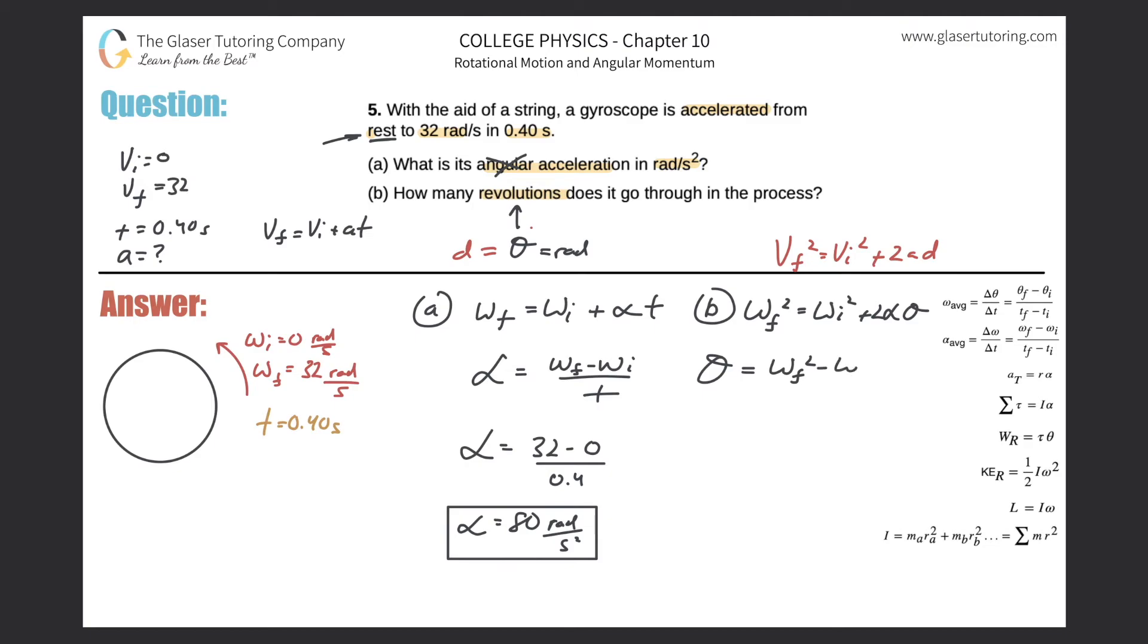Let's plug in the value: 32 squared minus zero, all divided by two times our alpha of 80. That's basically an exact value because it's just 32 over 0.4.